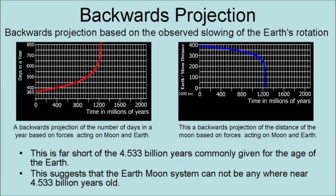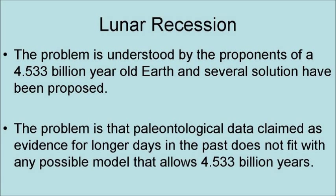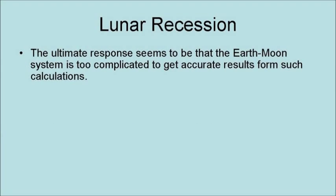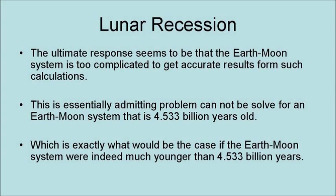This suggests that the Earth-Moon system cannot be anywhere near 4.533 billion years old. The problem is understood by proponents of a 4.533 billion year old Earth, and several solutions have been proposed. The problem is that paleontological data claimed as evidence for longer days in the past does not fit with any possible model that allows 4.533 billion years. The ultimate response seems to be that the Earth-Moon system is too complicated to get an accurate result for such calculations — which is essentially admitting that the problem cannot be solved for any Earth-Moon system that is 4.533 billion years old, exactly what would be the case if the Earth-Moon system were indeed much younger.